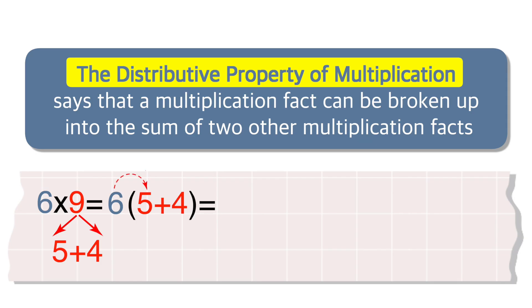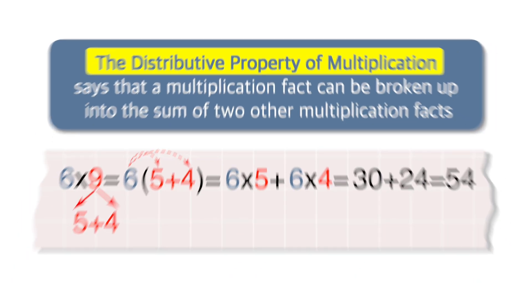Next, we multiply 6 by each number inside the parentheses. 6 times 5, 6 times 4. We add the products of each. 30 plus 24 equals 54.